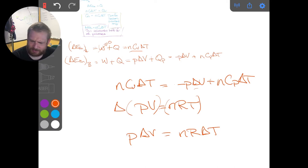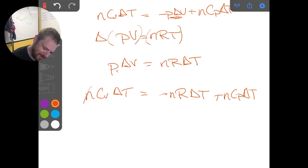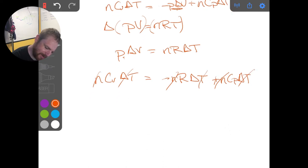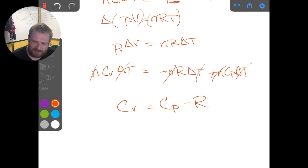And so now we can substitute this in for this expression, this P delta V up here, and we end up with NCV delta T equals, and we're going to substitute this in, minus NR times delta T plus NCP delta T. And you will see that the N's and the delta T's cancel from all these terms. And we end up with CV is equal to CP minus R, or CP is equal to CV plus R.